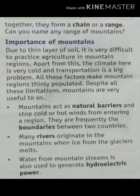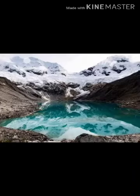Many rivers originate in the mountains when ice from the glaciers melts. Glaciers are frozen rivers of ice, and when they melt they become rivers. This way, the glaciers melt and many rivers originate from the mountains.